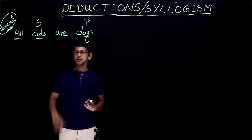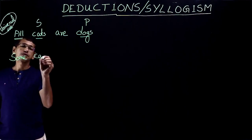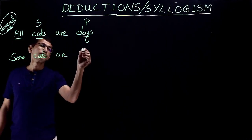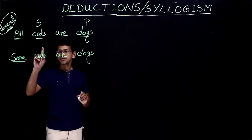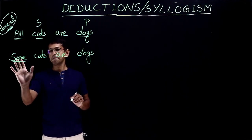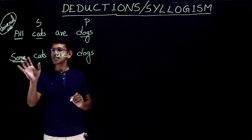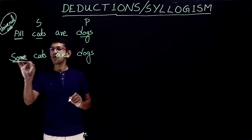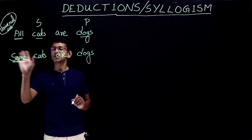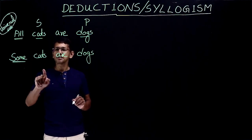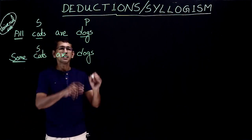That's the first type of statement. The second type starts with "some" — some cats are dogs. The identifier is "some". If the statement starts with some and the statement is positive — meaning there's no "no" or "not" — this is known as a particular positive statement. The first term, cats, is the subject, and the second term, dogs, is the predicate.